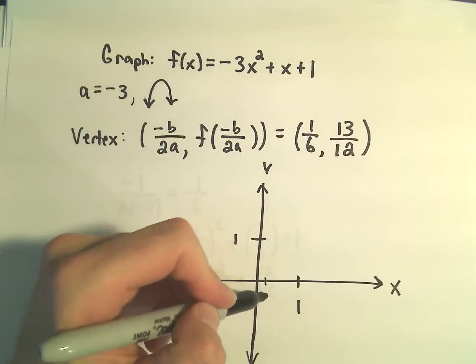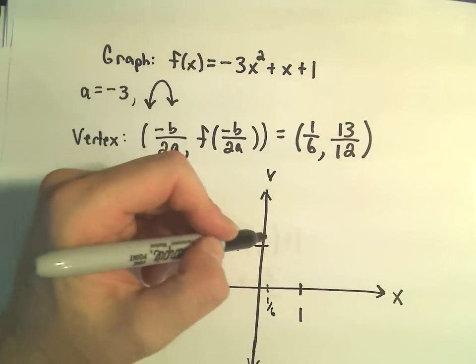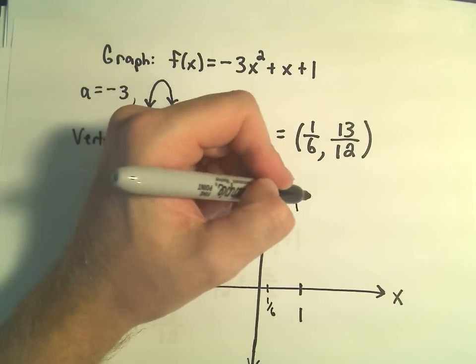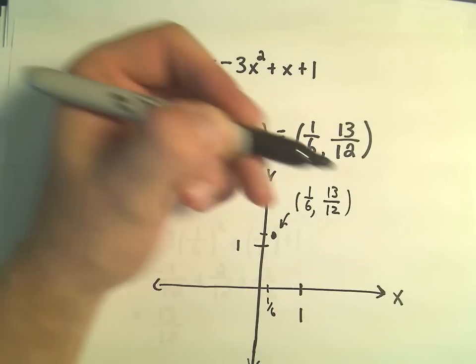So 1 sixth isn't very big at all. That's a pretty small number. 13 over 12, that's a little bit bigger than 1. So let's put the vertex right there. And again, it's always good to kind of label things. So I'll say that's 1 over 6, 13 over 12.